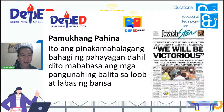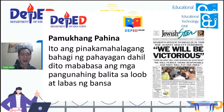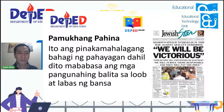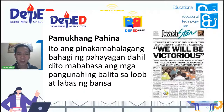Kalakay na natin ang iba't ibang bahagi ng pahayagan. Una ay ang pamukhang pahina — ang tawag natin dito sa Ingles ay front page. Ito ang pinakamahalagang bahagi ng pahayagan, dahil dito mababasa ang mga pangunahing balita sa loob at labas ng bansa. Kung ikaw ay bibili ng pahayagan o dyaryo, ito ang unang tatambad sa iyo — ito yung pinakaharap. Dito sa pamukhang pahina nakalagay ang mga pangunahing balita, pinakamainit na pangyayari sa ating paligid — national news o world news. Dito rin natin makukuha ang mga impormasyong pinaka-inaabangan ng mga mambabasa.